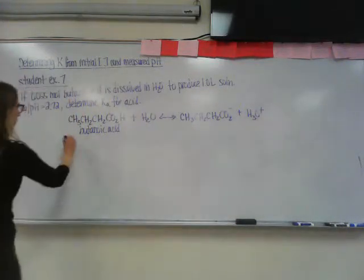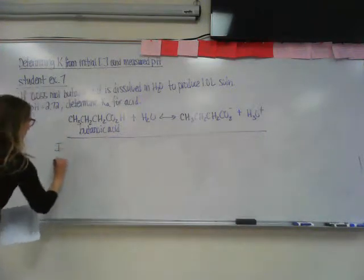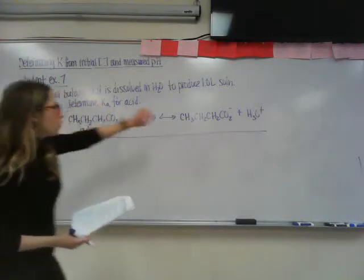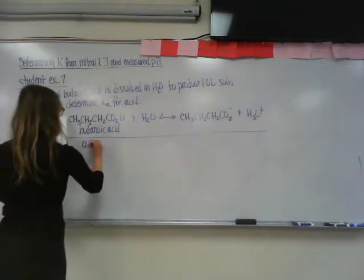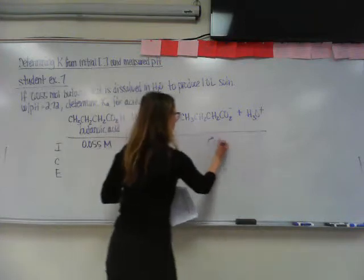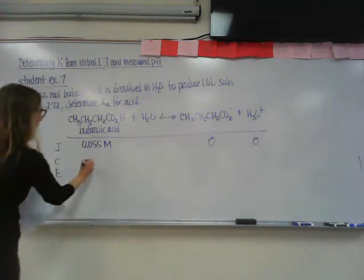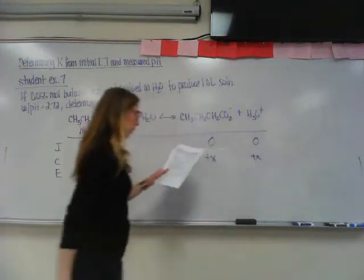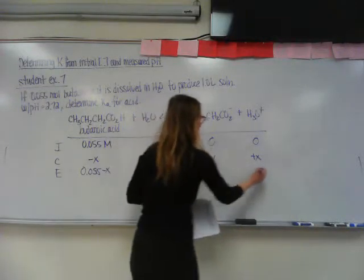And if I take this, and I put my ICE table underneath it, my initial concentration is going to be 0.055, which is 0.055 moles divided by one liter, which is just 0.055 molarity. We have none of these ions in solution initially, so the concentration is 0.0 molarity, this is minus x, this is plus x, and this is plus x. At equilibrium, it's 0.055 minus x, and this would be x, and this would be x.